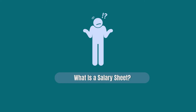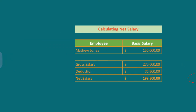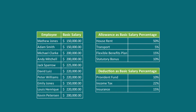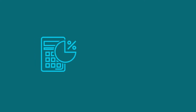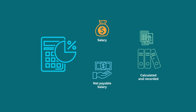So the first question is: what is a salary sheet? A salary sheet is a report where the net payable amount to an employee is recorded. The basic wage of an employee, extra allowances, and deductions are recorded here. Upon these calculations, gross salary and net payable salary are calculated and recorded.